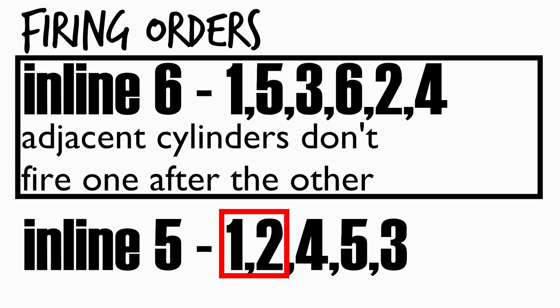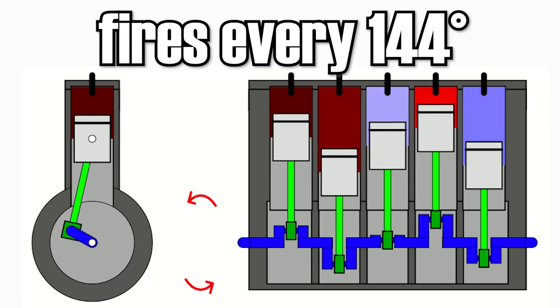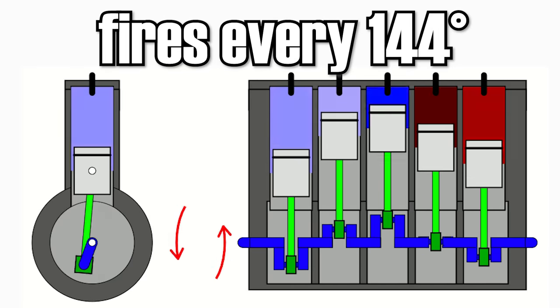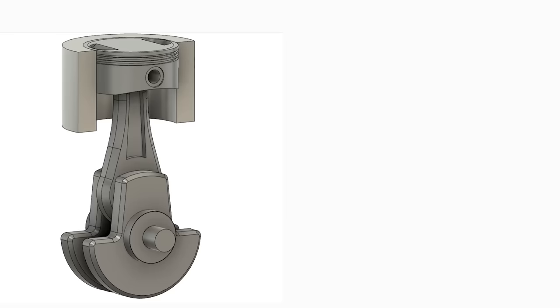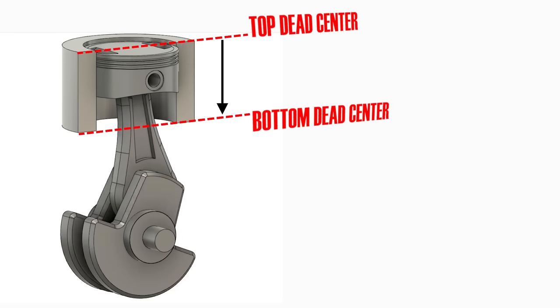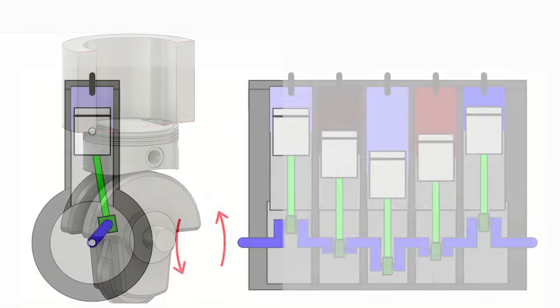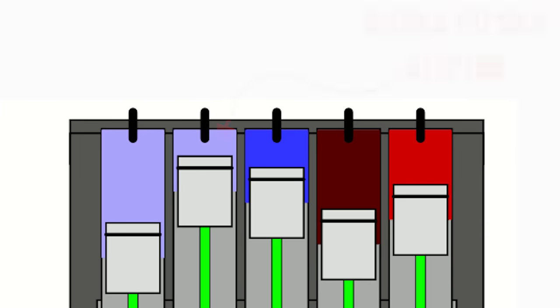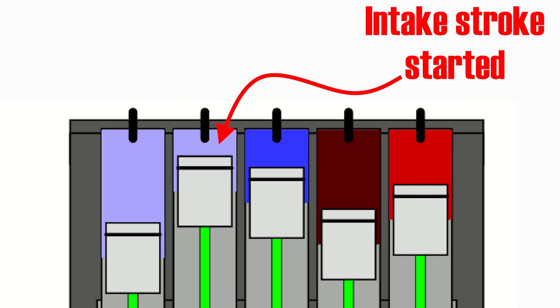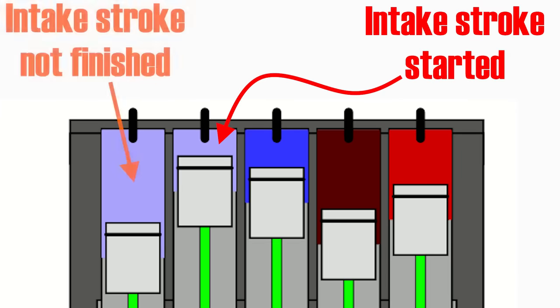1, 2, followed by 4, 5. Now in the Inline 5, a cylinder fires every 144 degrees of engine rotation. And as we know, an engine stroke or piston top to bottom is 180 degrees of engine rotation. This means that cylinder 2 will begin its intake stroke before the intake stroke of cylinder 1 is over. The same thing happens with cylinders 4 and 5.